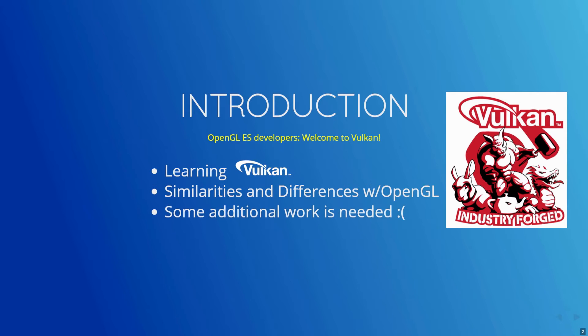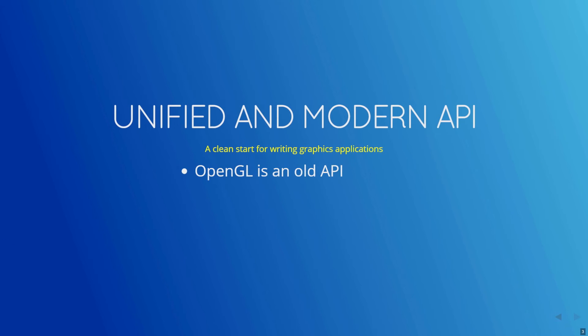For developers writing cross-platform applications that need to work on PCs, mobile devices, and consoles, this has been a difficult process — partially because OpenGL ES was a subset of OpenGL, and also because vendor-specific extensions to the language to support new hardware have made supporting multiple classes of hardware even more complex. Vulkan simplifies this by providing a single unified and modern API that spans all platforms.